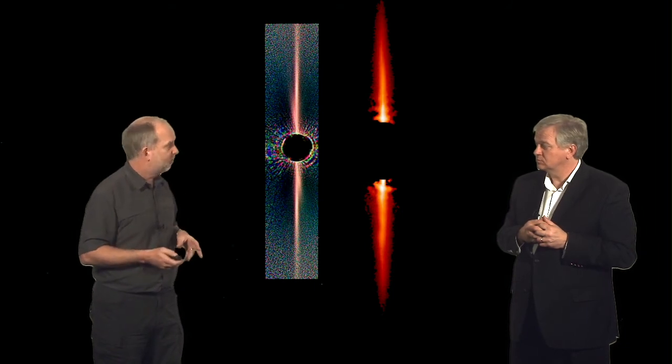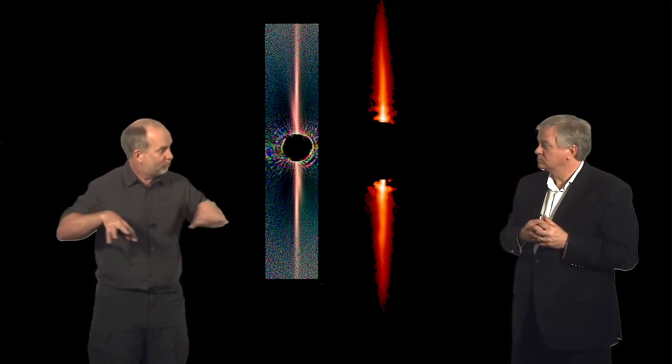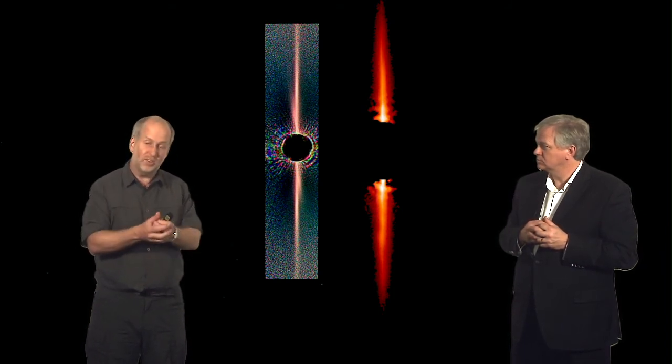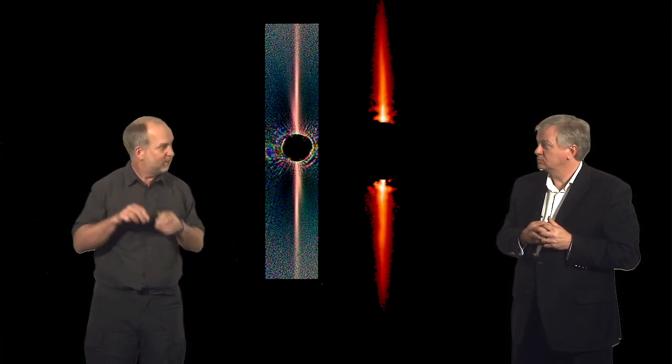But most of the mass in one of these disks is not going to be in the center, at least to begin with. It's going to be out in the spinning disk. Somehow, we need to move most of that mass into the center, because as we know in our own solar system, the mass is not in the planets. The mass is in the middle.